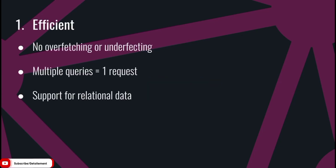GraphQL has many features that make it a great choice for building an API. First of all, GraphQL is very efficient. It allows the client to ask for what information it needs and the server will respond with only that data. It's also possible to run multiple queries in a single request and you can navigate the relationships of entities as well. For example, you can ask GraphQL for a list of your friends and the name of their friends.